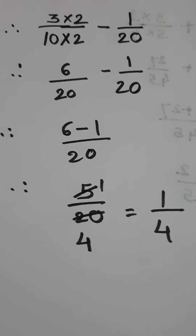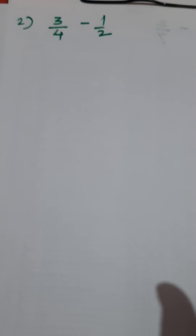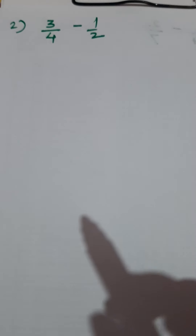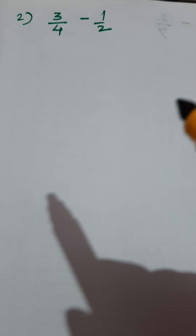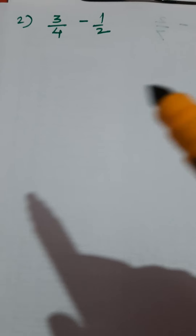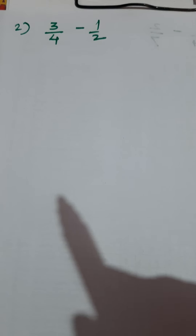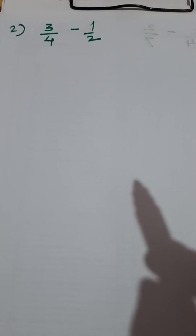Like this way, we have seen the first subtraction of unlike fractions. Now see the next example: 3 upon 4 minus 1 upon 2. Once again, observe the denominators very carefully. The first fraction has denominator 4 and the second fraction has denominator 2. 2 and 4 are from the same table. We can convert 2 into 4 — 2 twos are 4 — so multiply the fraction by 2.